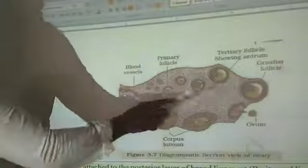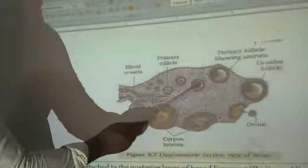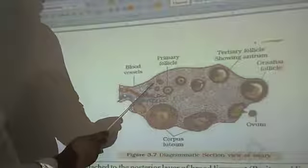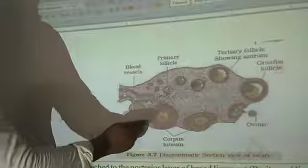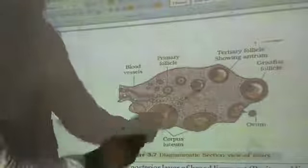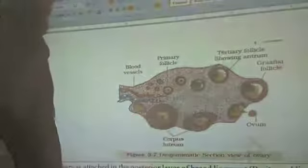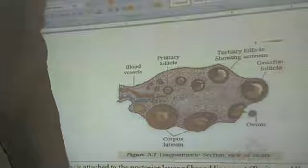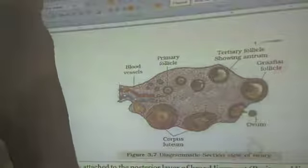The cortex region of the ovary contains different developing stages of follicles. The primary follicle becomes a secondary follicle, the secondary follicle becomes a tertiary follicle, and the tertiary follicle becomes a Graafian follicle. All these follicles are collectively called developing follicles or ovarian follicles.